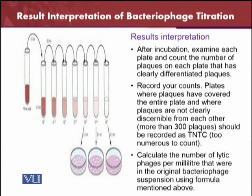For results interpretation, after inoculation we need to examine each plaque found on the plates and count the number of plaques on each plate, clearly differentiating them. These plaques need to be clearly differentiated, counted, and examined one by one. After counting, we record the results. Plates where plaques cover the entire plate and cannot be clearly distinguished from each other should be recorded as TNTC — too numerous to count.